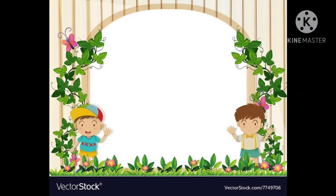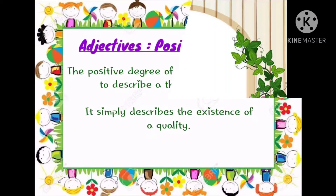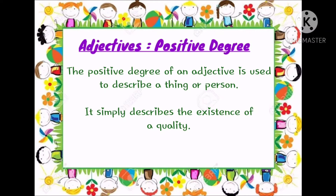Let's begin with our first degree, that is positive degree of comparison. The positive degree of an adjective is used to describe a thing or a person. It simply describes the existence of a quality in a thing or in a person. It does not compare a particular thing with any other thing — it only describes the quality.